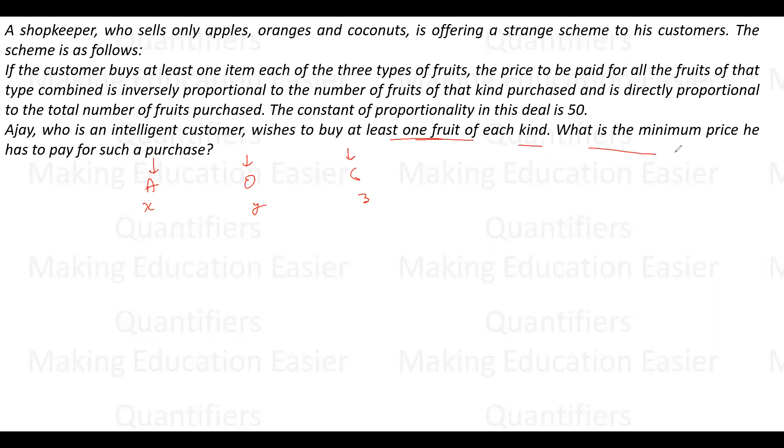We have to minimize the equation to find the minimum price. The price is inversely proportional to 1/x for apples, 1/y for oranges, and 1/z for coconuts. The combined price is inversely proportional to (1/x + 1/y + 1/z).